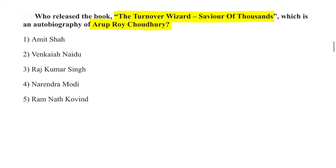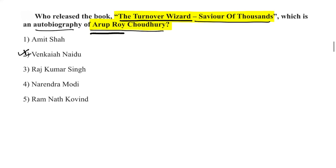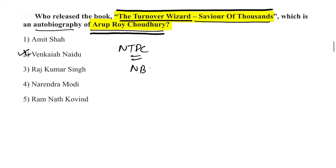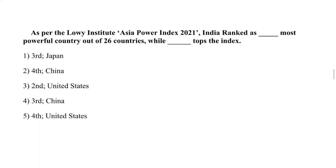The book 'The Turnaround Wizard: Saviour of Thousands', an autobiography of Arup Roy Choudhury, was released by Venkaiah Naidu. Arup Roy Choudhury is the former Chairman and Managing Director of NTPC Limited and NBCC.